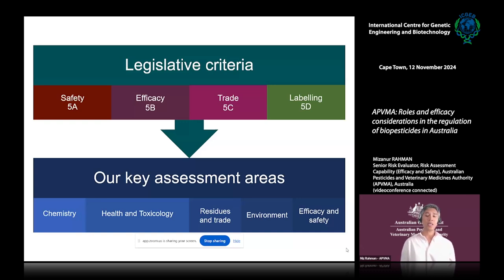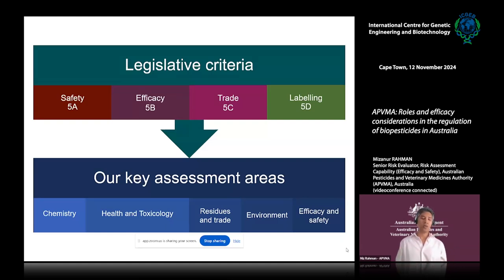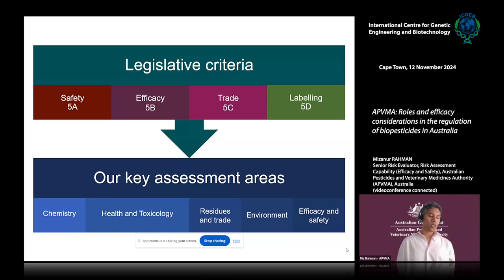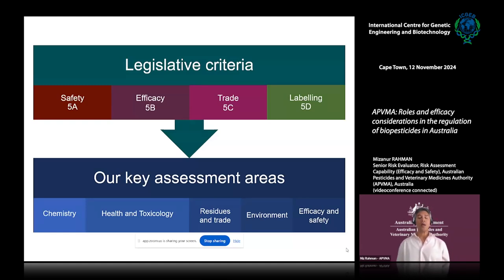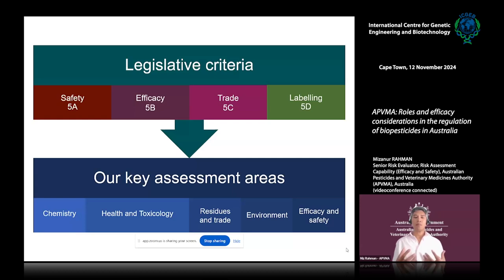We also have a science-based risk assessment, and the key risk assessment areas are chemistry, health and toxicology, residue and trade, environment, and efficacy and safety. I work in efficacy and safety, so I want to give you a brief overview of what we do. We have a number of scientists working in this area, and our key task is the efficacy and safety assessment — specifically, when a product is used in accordance with the label directions, it will be effective as per the labeled claim, and its application to the target crop will not cause any unintended adverse effect. We are also involved in collaboration with domestic and overseas regulators to promote cooperation and coordination on ongoing and emerging matters related to efficacy and safety. That's the organizational perspective.